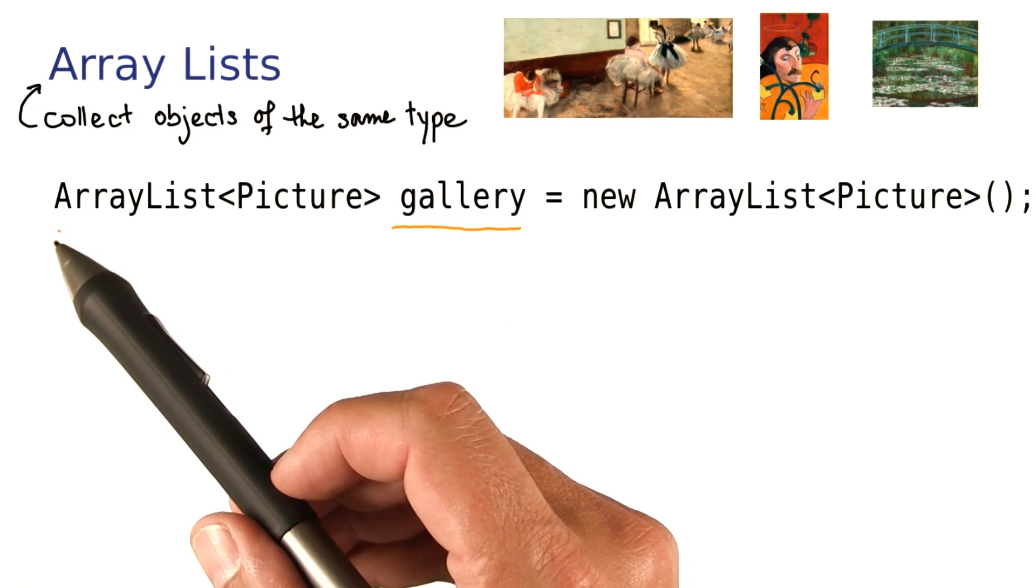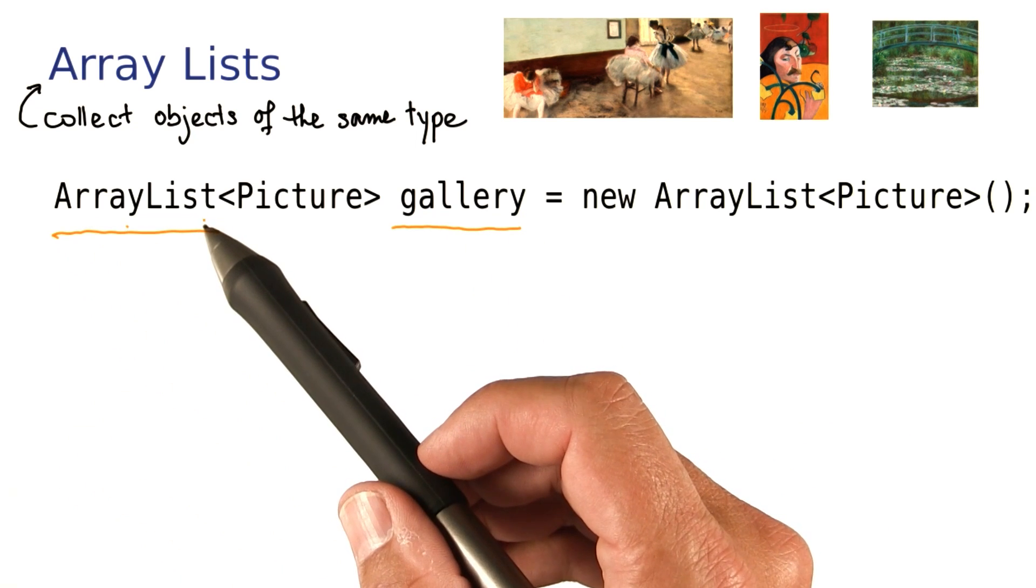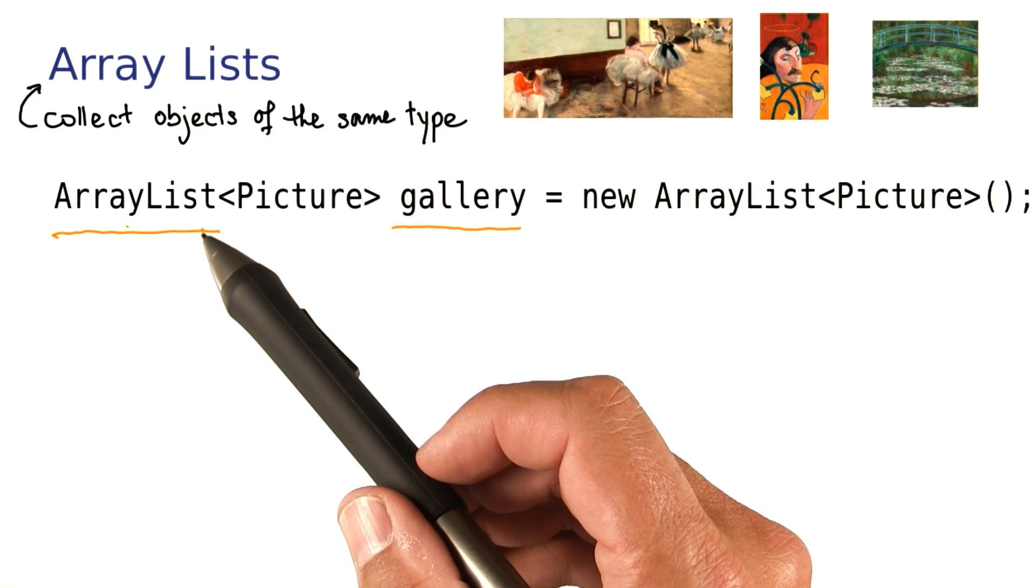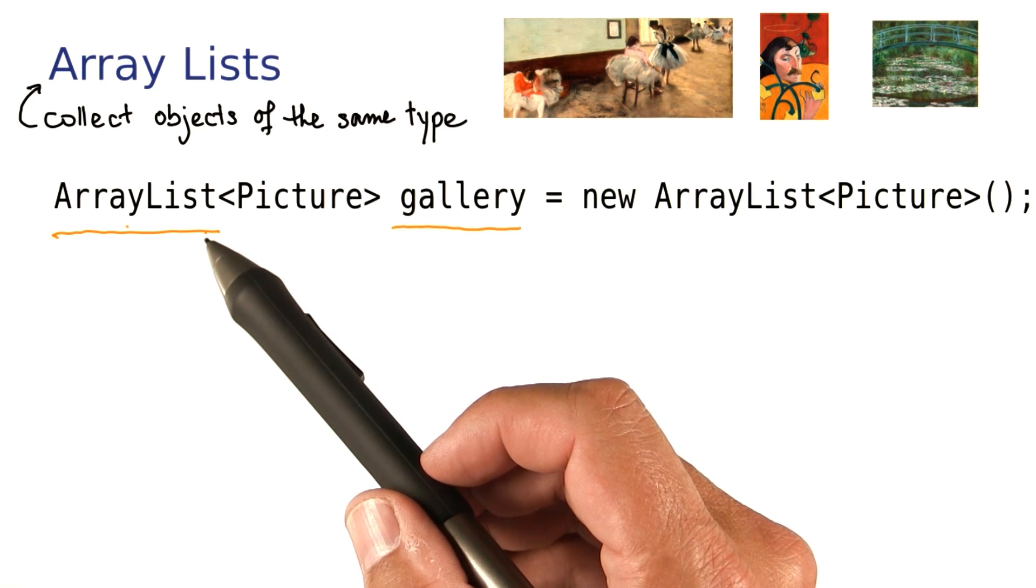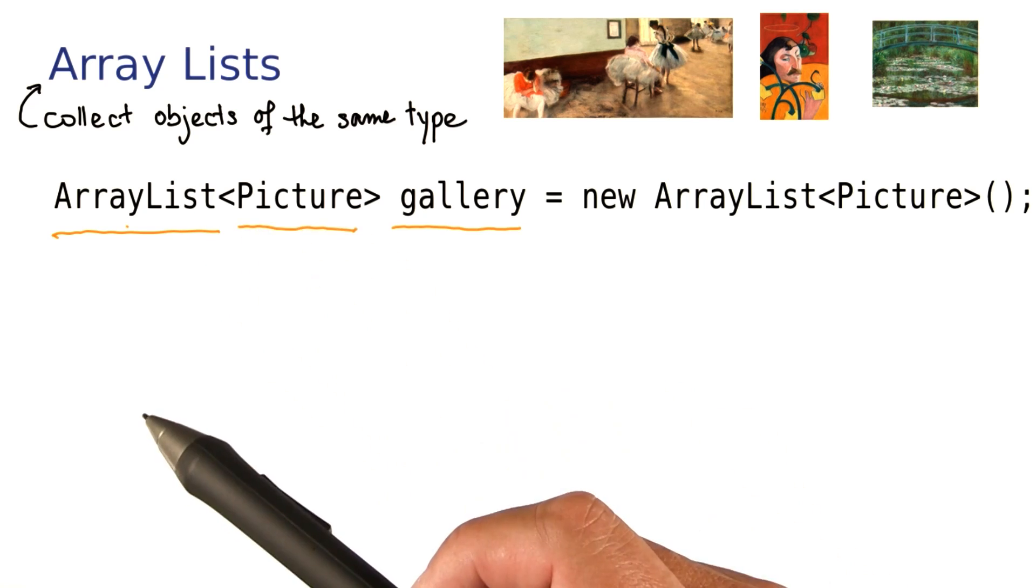Its type is an ArrayList, but whenever we have an ArrayList, we need to also specify the type of the objects that it collects. That's the pictures here.